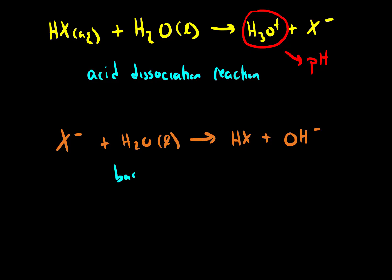This is known as a base dissociation reaction. So every single acid reacts with water to form hydronium. Every single base reacts with water to form hydroxide. And the formation of hydroxide means that we're creating a solution that's basic. So we can calculate the pOH from this hydroxide concentration.